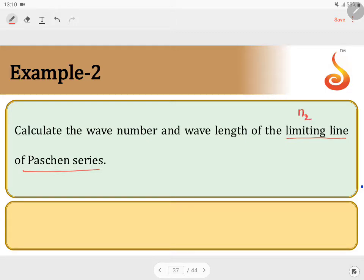Limiting line should be N2 is equal to infinity. Paschen series means N1 should be equal to 3. Therefore,